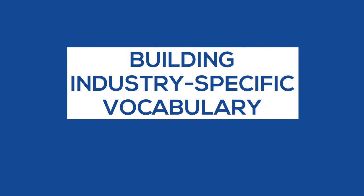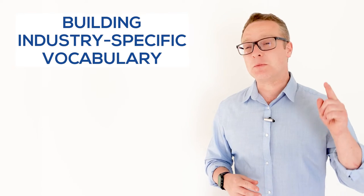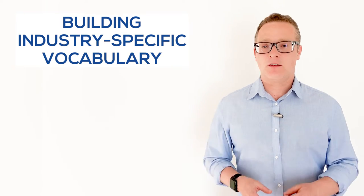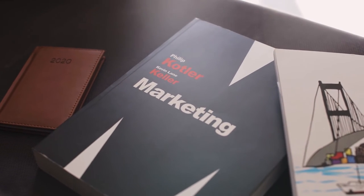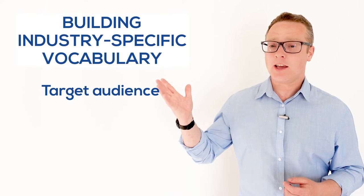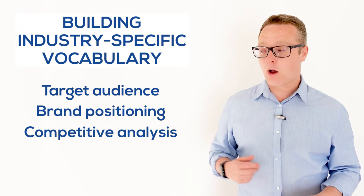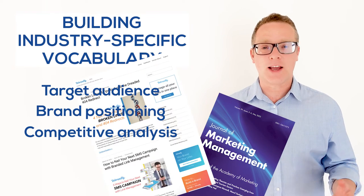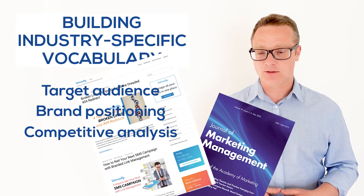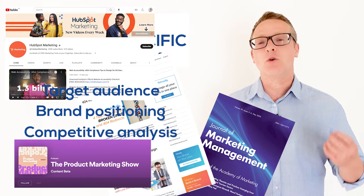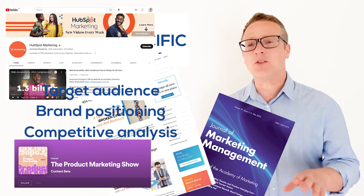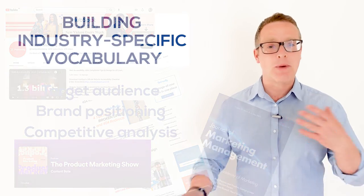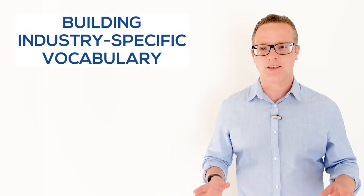Building industry-specific vocabulary. To improve your English for your specific job, start noticing lexical chunks specific to your field or expertise. For example, in marketing it's essential to grasp concepts and chunks such as "target audience," "brand positioning," or "competitive analysis." Utilize resources such as journal articles, blogs, or websites about your industry to find these lexical chunks. Look for YouTube channels or listen to podcasts which focus on your industry, and don't worry if the level is a little too high — after a while, these lexical chunks will start to stand out.